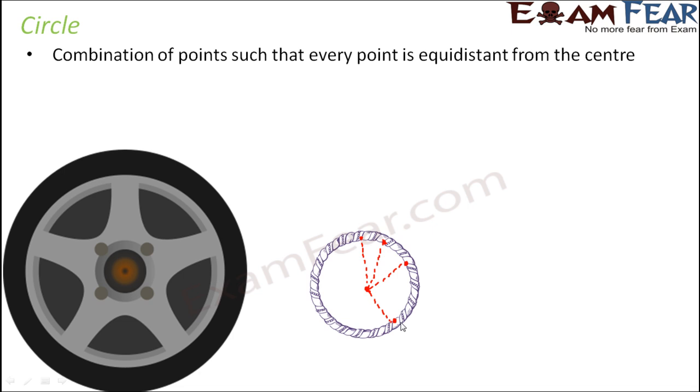Now we want to draw a circle. Let's say we have to draw a circle of radius 5 centimeters. What is radius? Radius is the distance of any point on the circle from the center. Any point on the circle will be at equal distance from the center, so any of those distances is termed as the radius. So we have to draw a circle where each point is at a distance of 5 centimeters from the center.